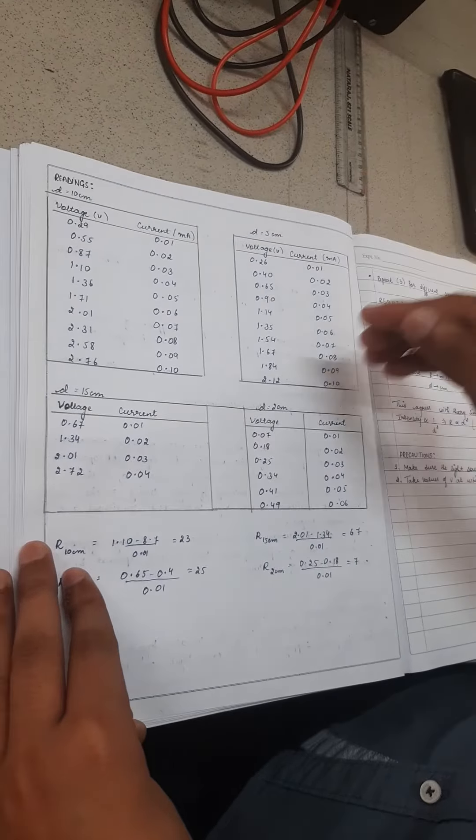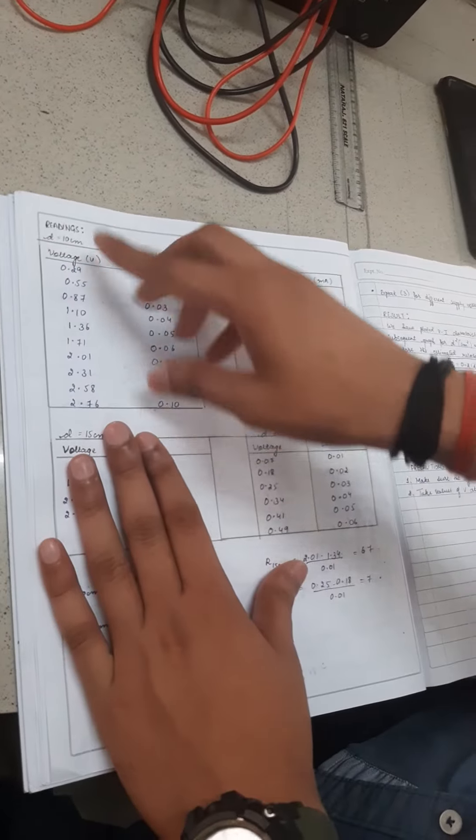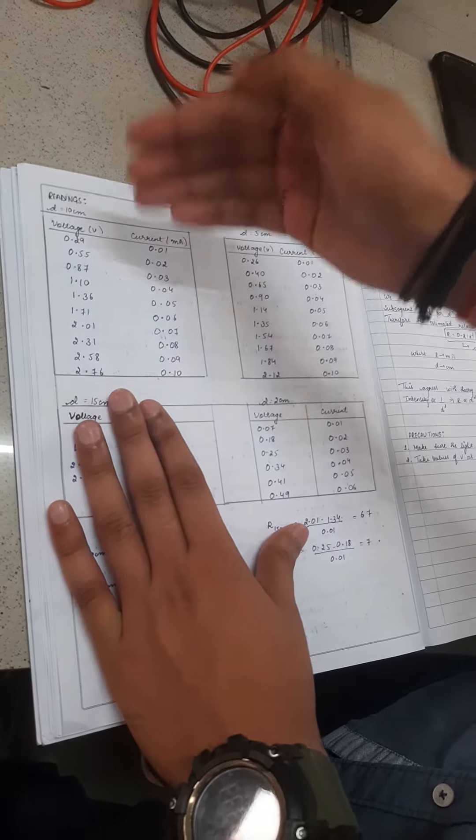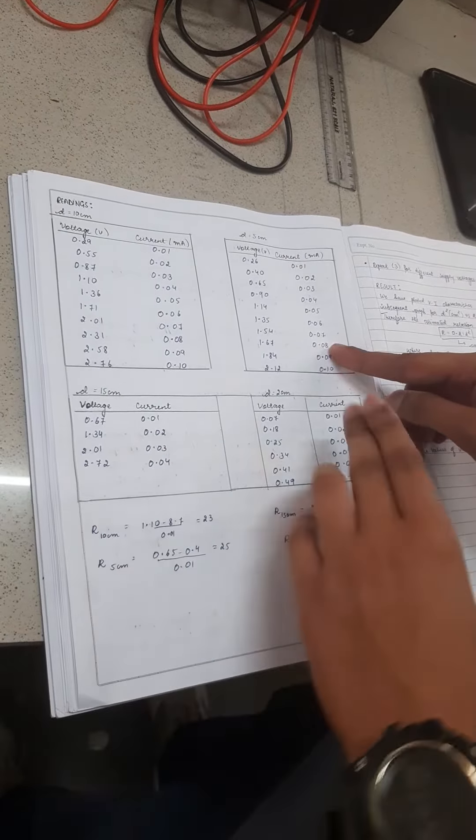After performing the experiment for different distances, we observe the table as follows. We have found the values for 10 cm and the corresponding voltage and current for 5 cm. We have plotted these results for 15 cm and 2 cm also.